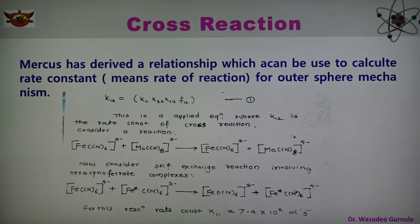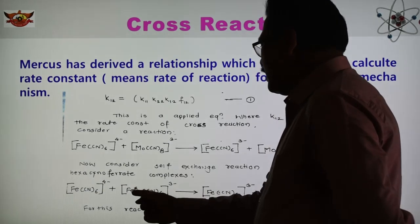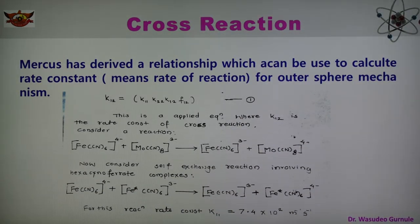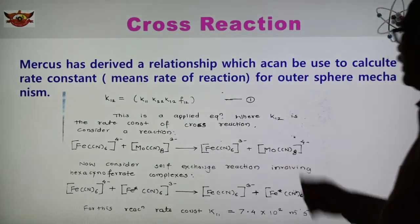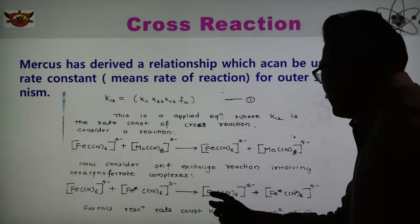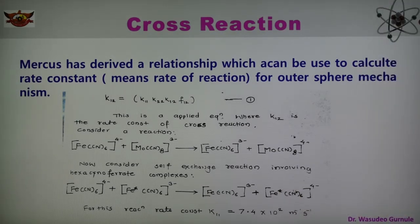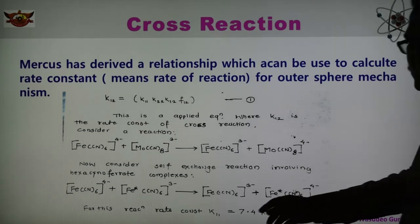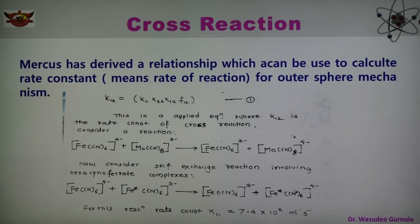Now consider the self-exchange reaction involving the hexacyanoferrate complex. Here the metal is the same Fe and Fe*, in which self-exchange reaction is taking place: Fe(CN)6⁴⁻ + Fe*(CN)6³⁻ gives Fe(CN)6³⁻ and Fe*(CN)6⁴⁻. From Fe to Fe* the charge is transferred. For this reaction, the rate constant K11 equals 7.4×10² per meter per second.